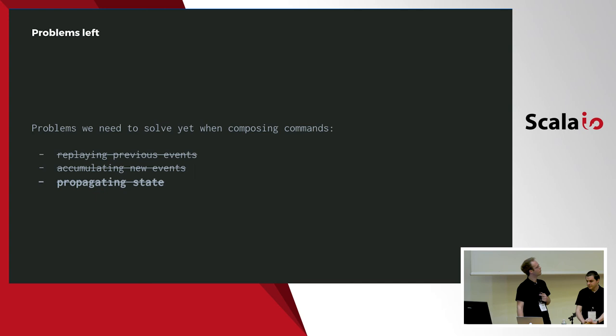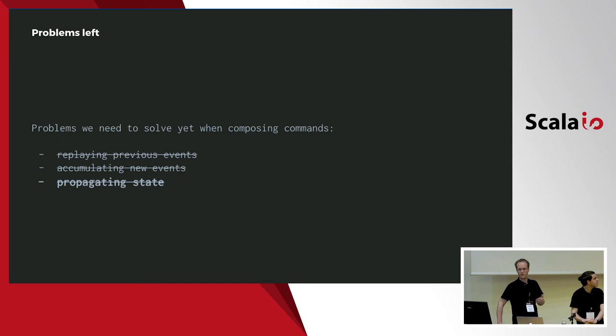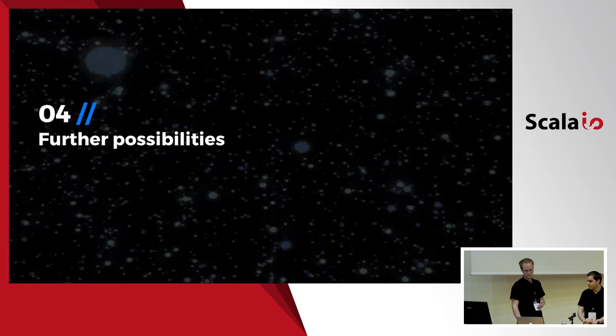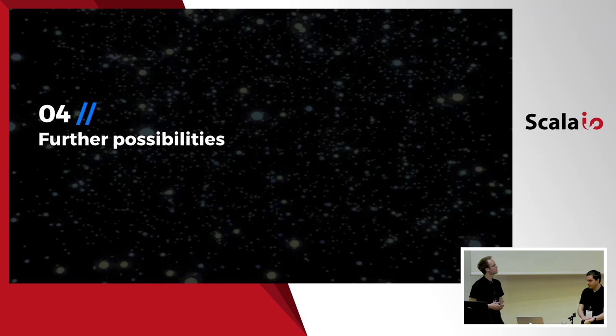Let us make a quick recap. It looks like we're finally there: we managed to replay previous events, accumulate them on the way without doing it manually, and propagate state in a safe way. Also, the resulting code really looks the same as the one before we introduced any event sourcing in the first place. Let's see what other benefits we may have from this approach.